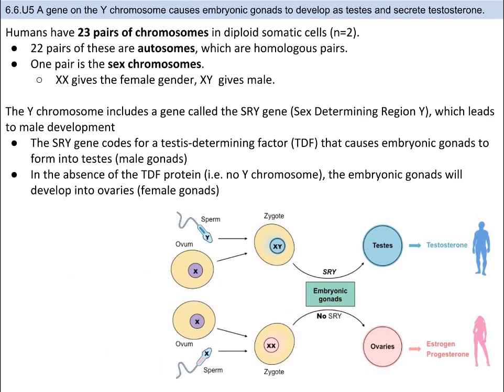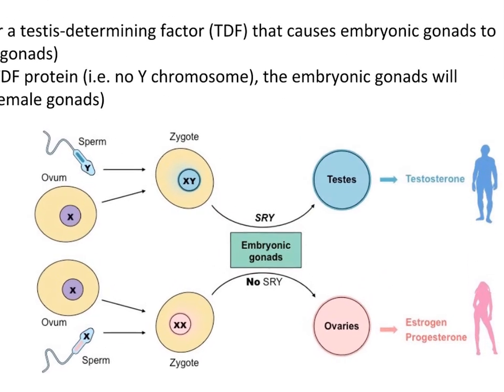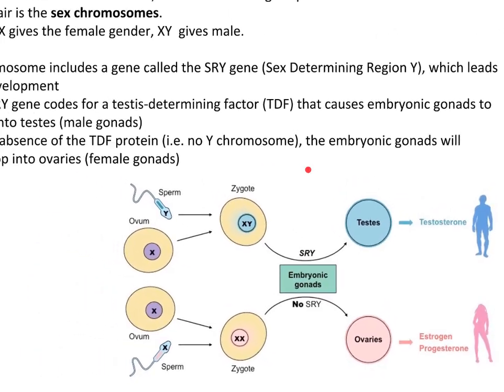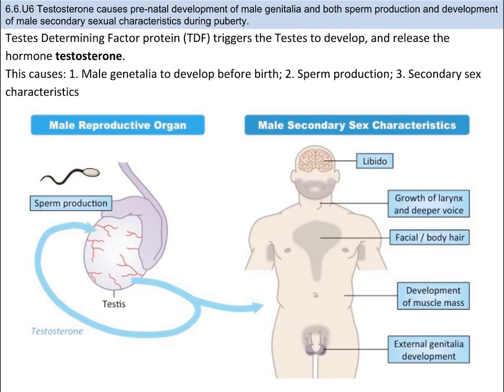Specifically, on the Y chromosome itself there's a gene called the sex-determining region Y, or SRY, that codes for a certain protein called TDF — the testis determining factor protein. In embryos, gonads can become either ovaries or testes. But if a Y is present, then the embryonic gonads will become testes based on the presence of this TDF protein. In males, once the TDF protein develops the embryonic gonads into the testes, they begin to produce the main reproductive hormone in males called testosterone.